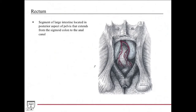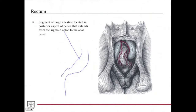The rectum is a segment of the large intestine that's located in the posterior aspect of the pelvis. It extends from the sigmoid colon down to the anal canal — that terminal portion of the GI tract — stretching beyond the sigmoid colon down into the pelvis and forming the final anal canal. We'll go through this in more detail in subsequent slides.